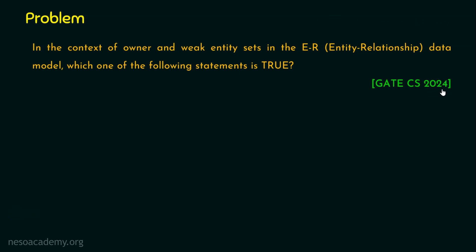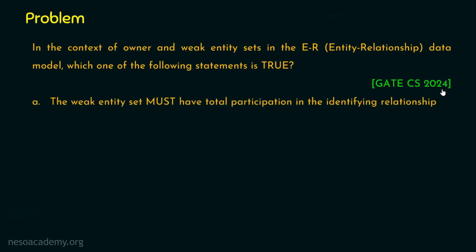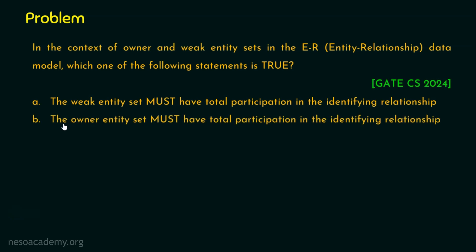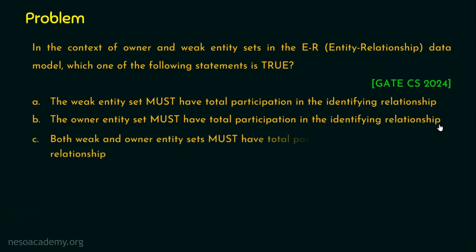Let's see the options now. Option A: the weak entity set must have total participation in the Identifying Relationship. Option B: the owner entity set must have total participation in the Identifying Relationship. Option C: both weak and owner entity sets must have total participation in the Identifying Relationship.